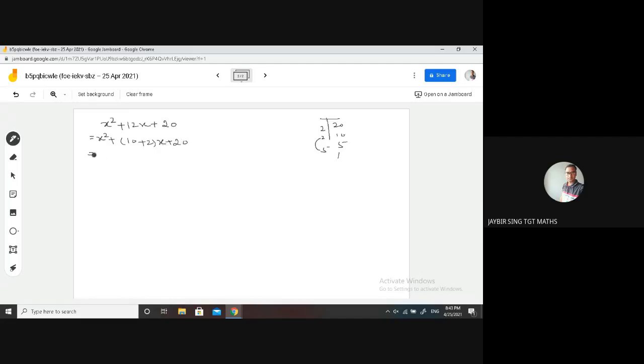So now we multiply this within. x square, plus 10 into x is 10x, plus 2 into x is 2x, plus 20. So in these two, what is common? x is common, here remains x plus 10, plus, here 2 is common, x plus 10. So you can see, x plus 10, x plus 10 is common, x plus 10, and x plus 2.